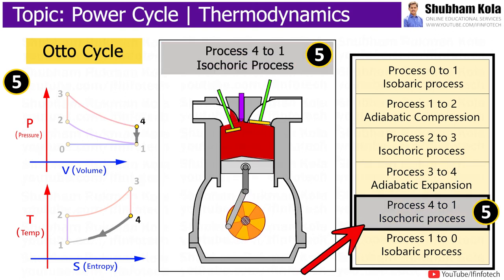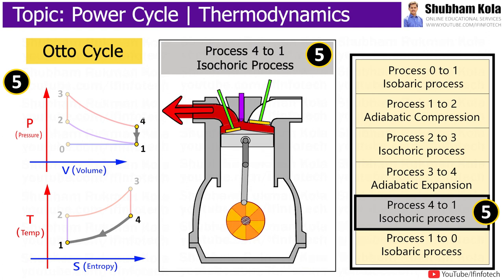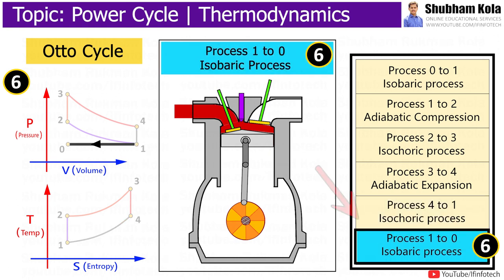Process 4 to 1 is an isochoric process, where heat is rejected from the air at constant volume. As the gas loses heat, the molecules lose kinetic energy, causing a decrease in pressure. During process 1 to 0, the mass of air is released to the atmosphere at constant pressure.